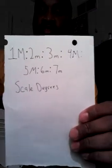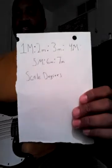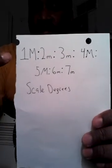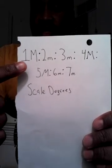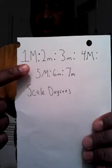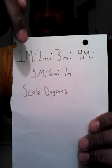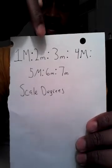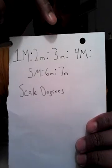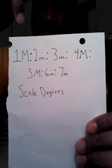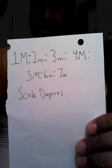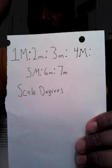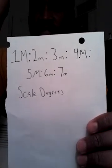I just wrote the diagram for scale degrees. The capital M represents a major chord, the lowercase m represents a minor chord, and the numbers are related to the notes in any major scale. The first note of the major scale gets a major chord. The second is a minor chord. The third is a minor. The fourth is a major. The five is a major. The six is a minor. And the seven is a minor. This is the progression.